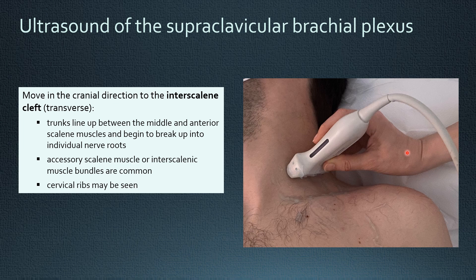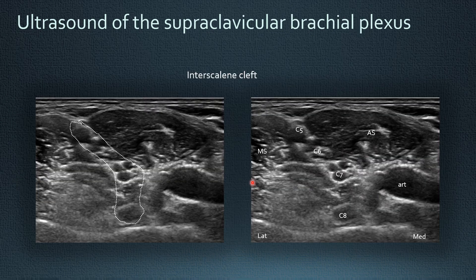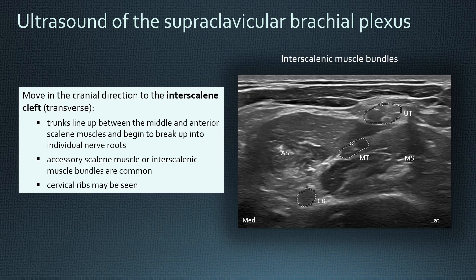After you examine the supraclavicular fossa with the trunks, you advance further cranial into the interscalene cleft, where the trunks — or rather the roots — line up more or less in a row in between the middle and anterior scalene muscles. The most superficial is the superior trunk with C5 and C6, which is already starting to divide, and the deepest part is C8. In some individuals there are muscle bundles between the plexus elements — interscalene muscle bundles — so the plexus elements are not immediately adjacent to each other.